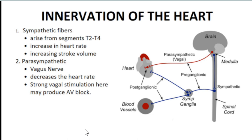The downside of sympathetic stimulation is insufficient time for the heart to relax. On the other hand, if vagal stimulation is too strong, it can lead to an AV block. In an AV block, there is a loss of coordination between the atrium and ventricle — instead of pumping sequentially and dependently, the atrium pumps on its own and the ventricle pumps on its own, completely independent of each other.